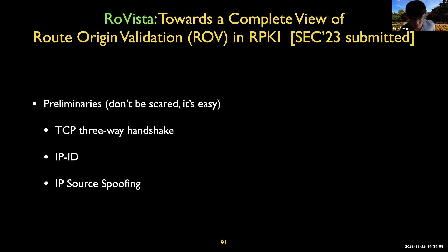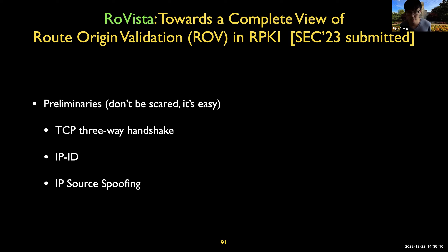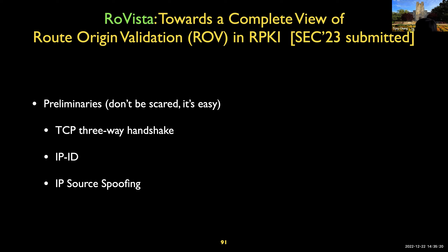What I'm going to show you is another side channel technique we can use to measure RPKI validation status. To understand this concept, you need to know three different techniques: TCP three-way handshake, IP ID, and IP source spoofing.